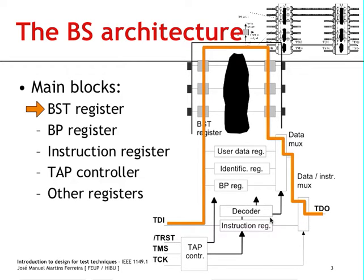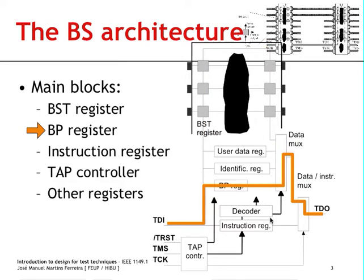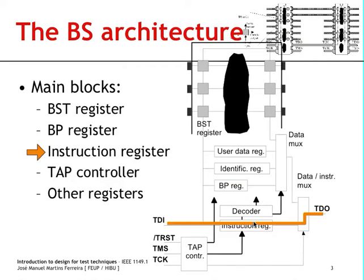Or if we load the so-called bypass instruction, then the instruction decoder will control this multiplexer to set up the TDI-TDO path through the bypass register as shown. This is the role of the instruction register.